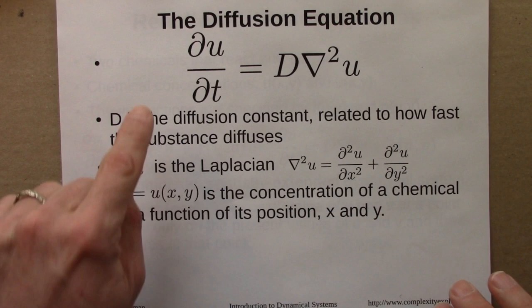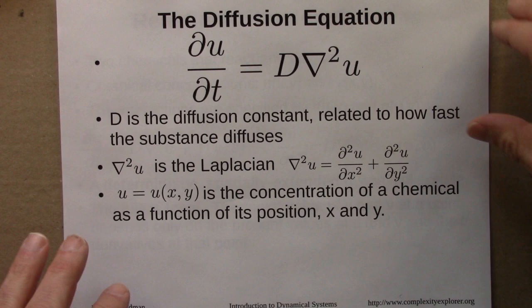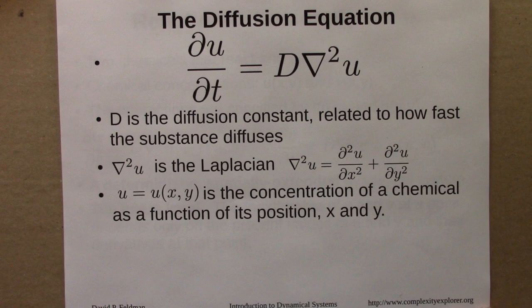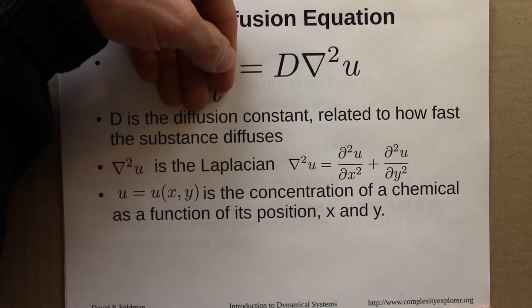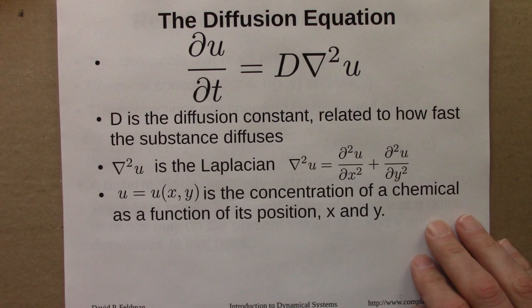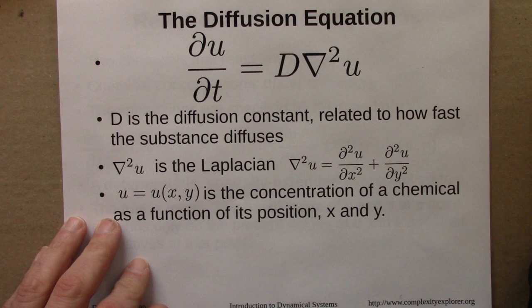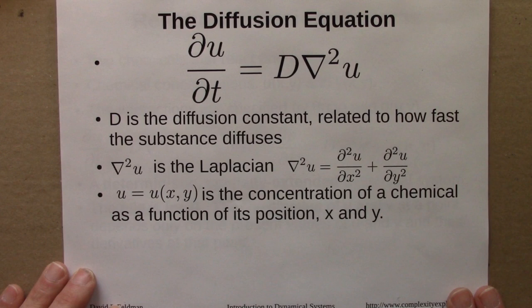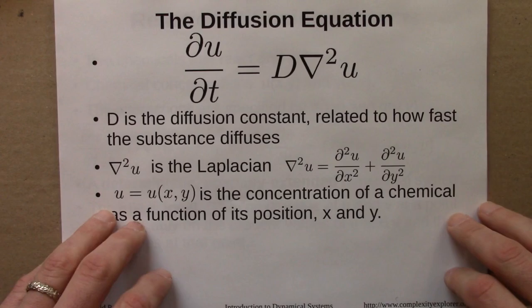So we might have, say on this sheet of paper, different concentrations at different points on the page. This describes the diffusion of substances once you know D and the initial conditions. In the equilibrium state, when this stops changing — if I set the rate of change equal to zero — that has the effect of setting the Laplacian equal to zero, which picks out the most boring function possible. It'll just be a flat, level distribution if the boundary conditions allow it. The main point is that diffusion leads to boring, homogeneous functions.